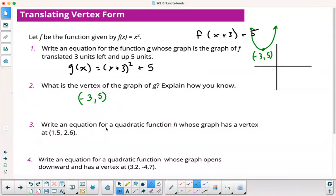Write an equation for quadratic function h whose graph has a vertex. Instead of telling us the translation, it tells us where the vertex is. This thing is going to go right 1.5 and up 2.6. So it's going to be x minus 1.5 squared, and then plus 2.6.